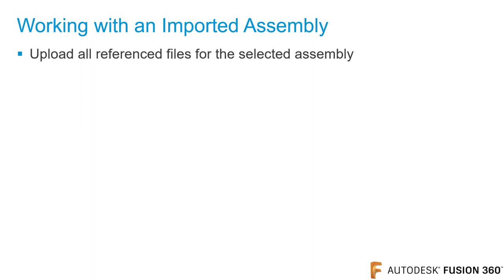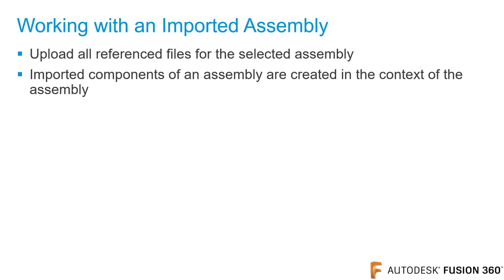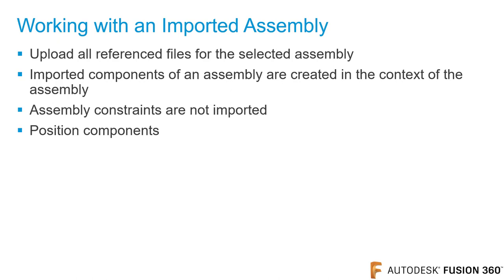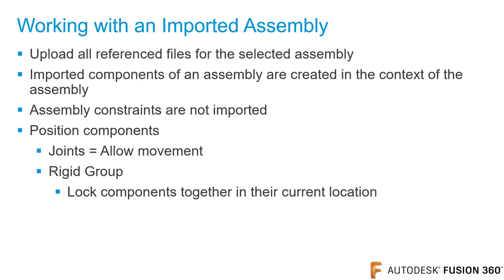When uploading an assembly, ensure that all components that make up that assembly are uploaded. When an assembly is uploaded, the reference components are created as local components in the imported assembly. Note that the assembly constraints are not imported, but you can position the components by either adding assembly joints or you can create a rigid group. A rigid group blocks all the selected components in their current location.